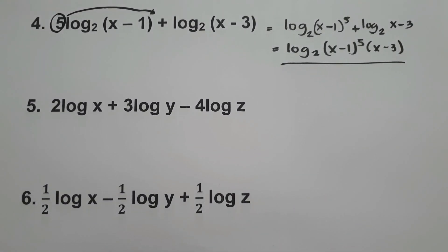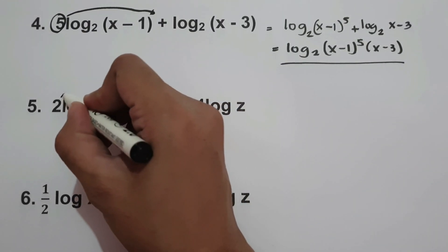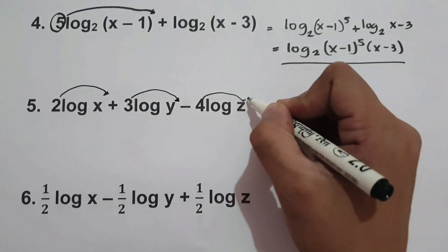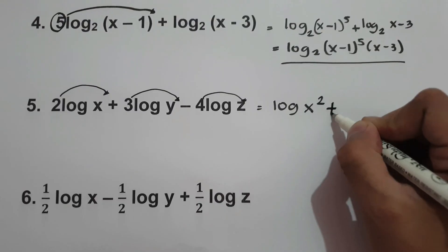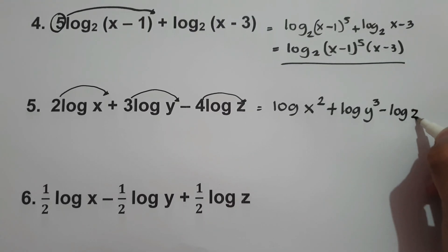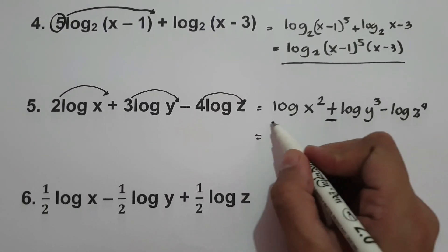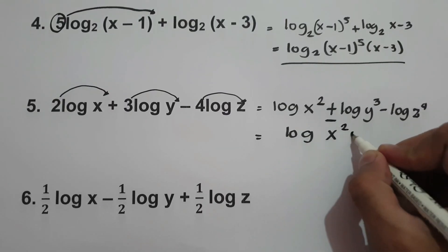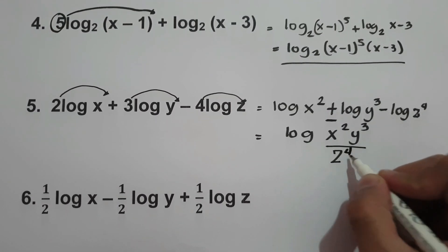What about number five? We move the coefficients 2, 3, and 4 into the exponents: log x² plus log y³ minus log z⁴. Since the first two are a sum, they form a product in the numerator, and the minus puts z⁴ in the denominator: log of x²y³ over z⁴. So this will be our final answer.